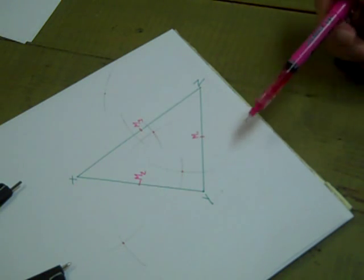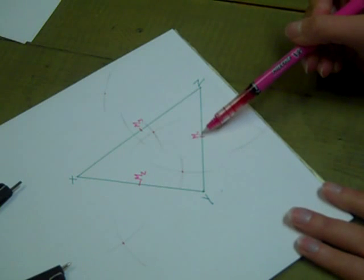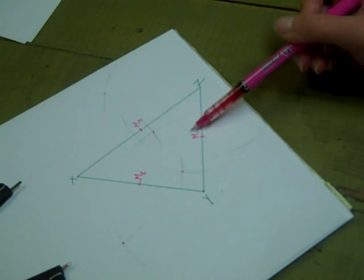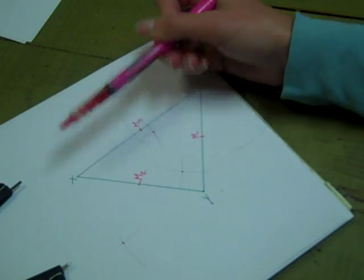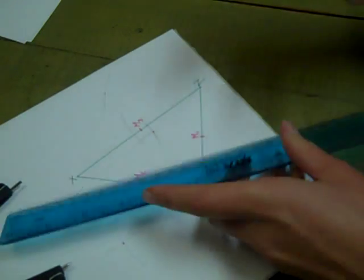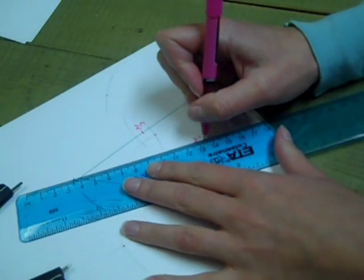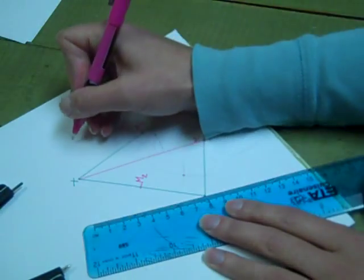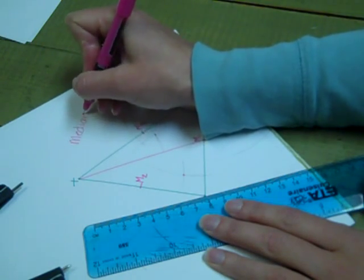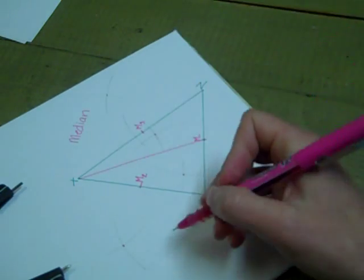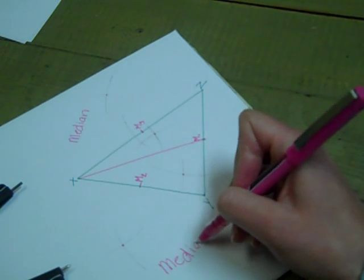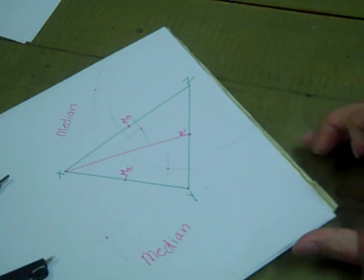So we're going to create some segments in our triangles using these midpoints. If I take M, the first midpoint, which I labeled M sub 1, and I connect that to the opposite angle, which in this case would be angle X, what I have created is called a median. I'll try to write that so you can actually see the word. So that is a median.